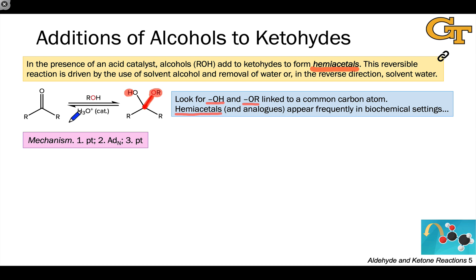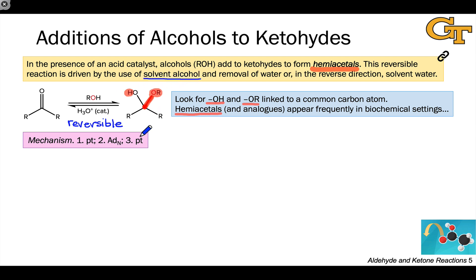Just like the addition of water, this reaction is reversible. In the reverse direction, the reaction amounts to the elimination of the alcohol from the hemiacetal. To get a useful amount of the product hemiacetal, we have to drive the reaction forward by taking advantage of Le Chatelier's principle — for example, by using solvent alcohol, a large excess of a reactant. And if we want to go all the way to the acetal, we'll also use removal of water, since that reaction releases a molecule of water.